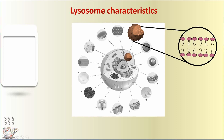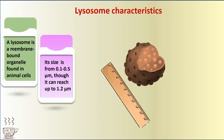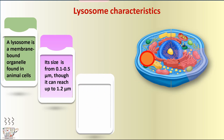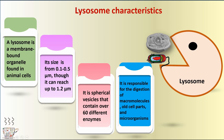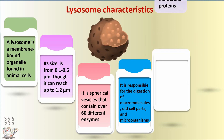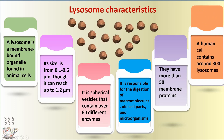Lysosome characteristics. Lysosome is a membrane-bound organelle found in animal cells. Its size is from 0.1 to 0.5 micrometers, though it can reach up to 1.2 micrometers. It's a spherical vesicle that contains over 60 different enzymes. It is responsible for the digestion of macromolecules, old cell parts, and microorganisms. They have more than 50 membrane proteins, and a human cell contains around 300 lysosomes.